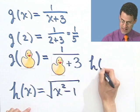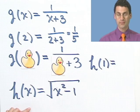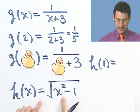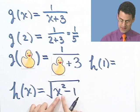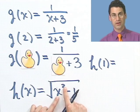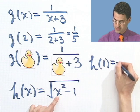Now, what would h of 1 equal? Well h of 1, wherever I see an x, I'm going to plug in 1. So I see a 1 squared. 1 squared is 1, minus 1 is 0. This is the square root of 0, which equals 0.